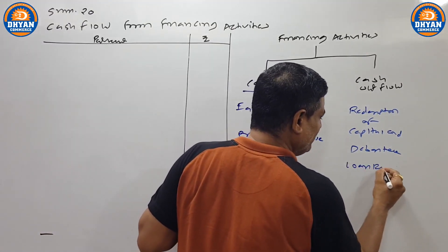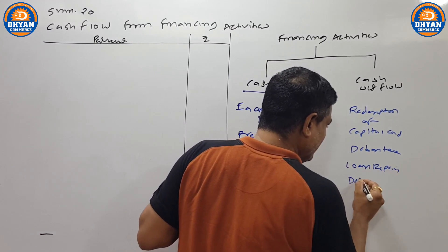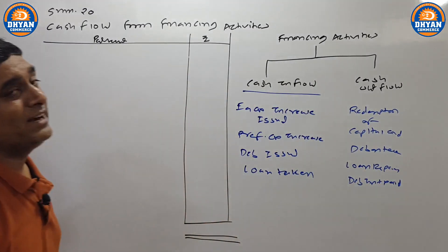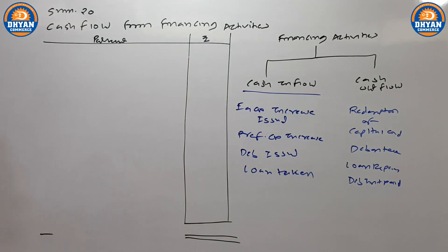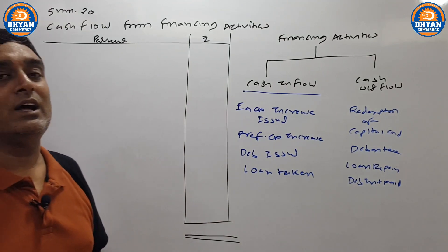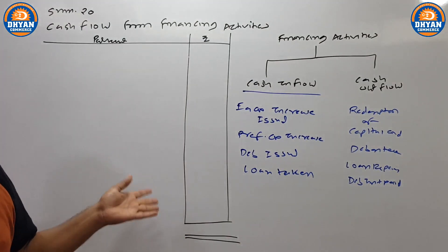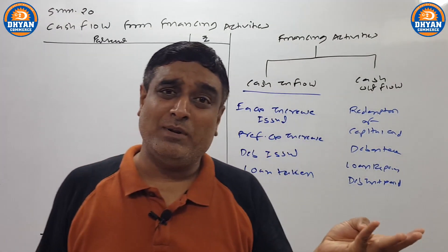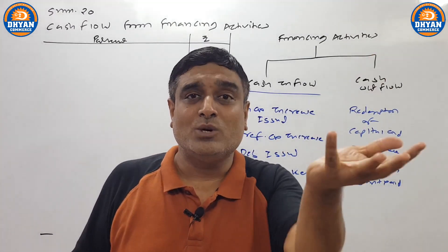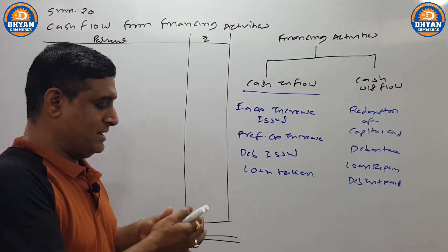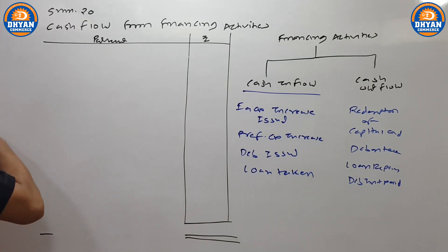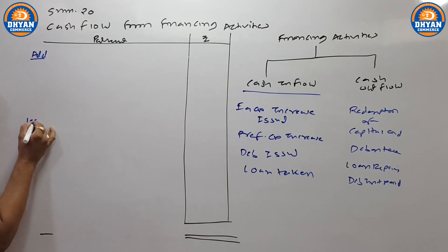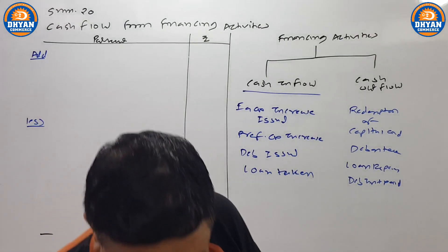So equity, preference, debenture, loan — issue karo, increase karo, paise receive ho — to yahan add karna hai. Paise jaye to yahan minus karna hai. Yeh Dhyan Commerce ki technique hai — add aur less. Chalo, ab main question start karta hoon.